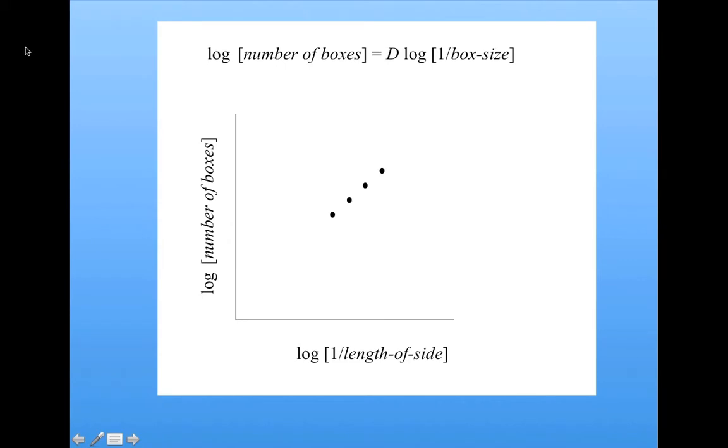You can see that if this is actually true, these should form a straight line, whose slope is the dimension. So we can estimate the dimension by plotting these points, doing our measurements for the boxes, and then plotting these points, drawing a straight line through them, figuring out what the slope of that line is, and that's our measured dimension.